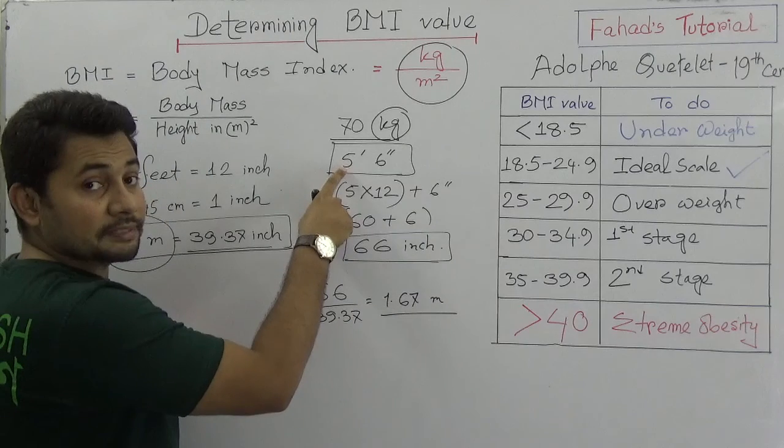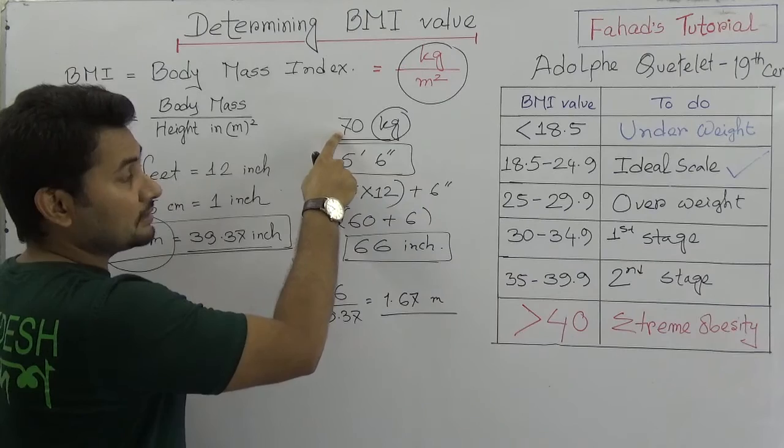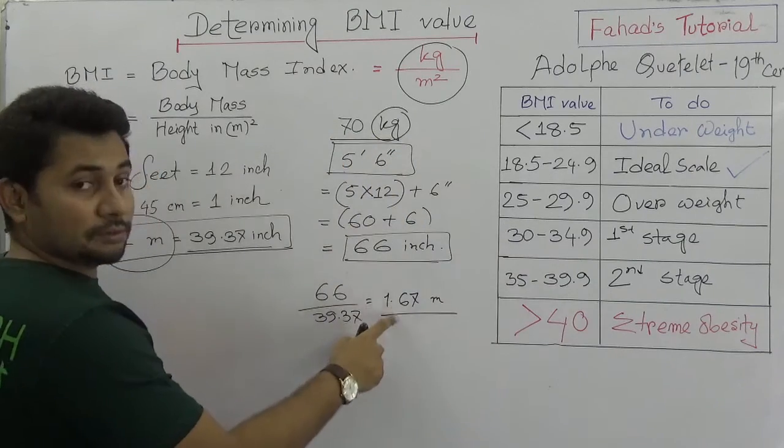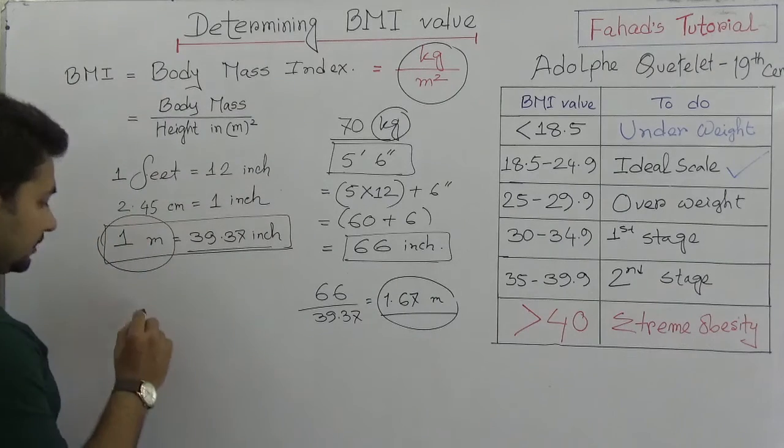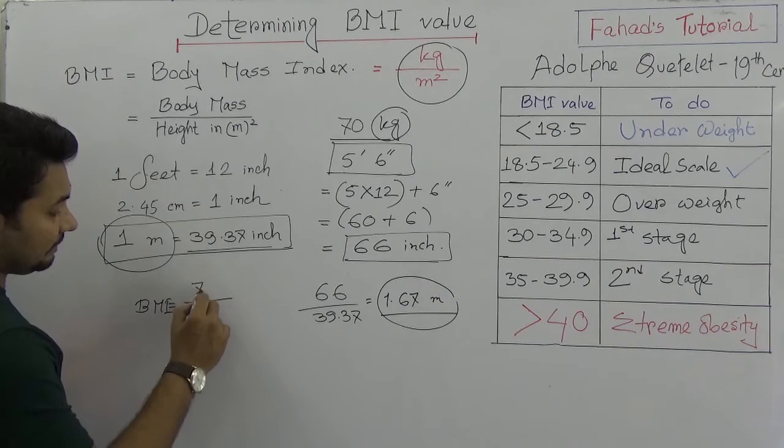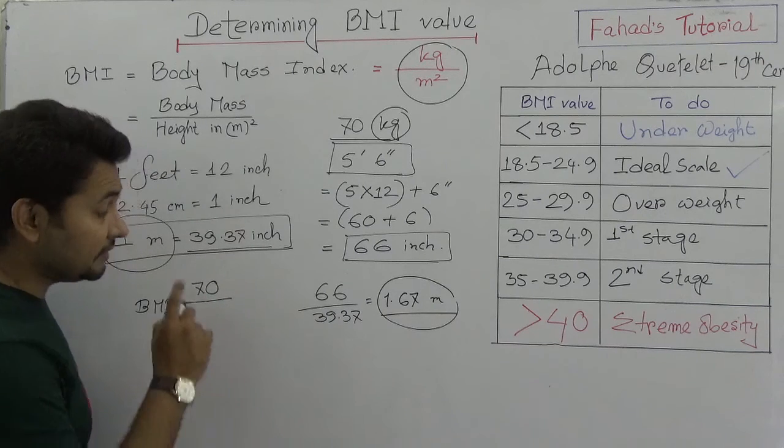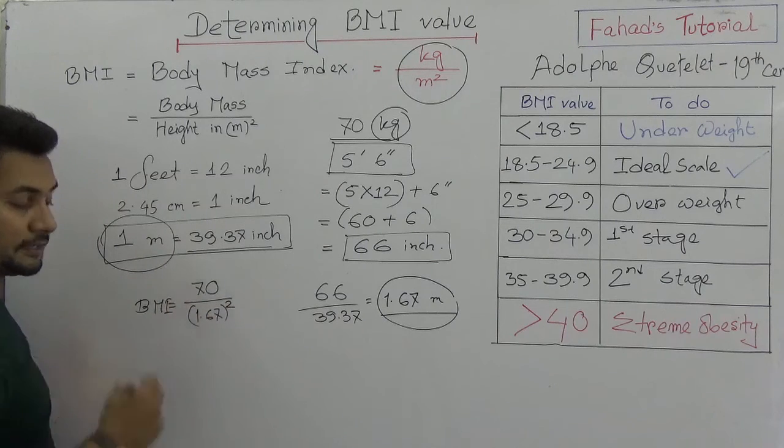So the person's height was given as 5 feet 6 inches and the weight is given 70 kg. So we got the height of the person as a meter, right? We got BMI is actually 70, is the kilogram of that person, divided by 1.67 whole square.